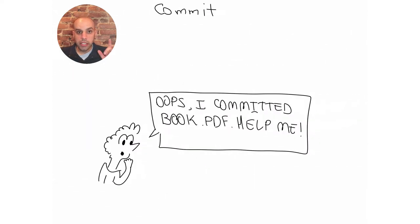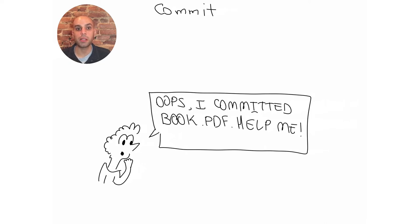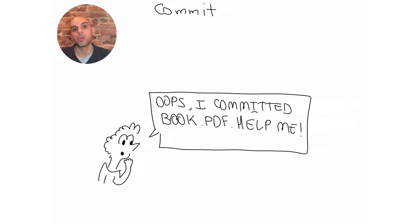Oops! This is a very common mistake. What happened here is that Alice committed a file that shouldn't be in the repository — in this case, she committed book.pdf, the book generated by the build system. It shouldn't be part of the source tracked by Git. Can you help her fix this? And also, can you help her set up the repository so that this error cannot happen again? Pause this video now, refer to the cheat sheet down below, and try to solve this. Then hit play and I will show you how I would solve this.